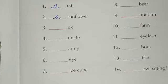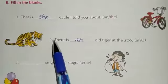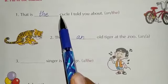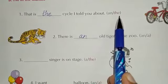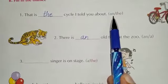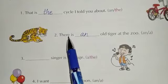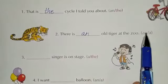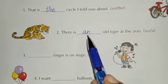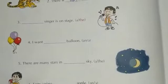I hope you have understood this. Let's move to exercise B: fill in the blanks. First: blank + cycle — C is a consonant word. We will choose 'the' from the options, because 'an' only goes with vowel sounds or vowel words. So we write 'the.' Second: 'There is a/an old tiger in the zoo' — 'old' starts with 'o,' its sound is vowel and it is a vowel word, so we use 'an' here. The remaining sentences you have to do yourself.